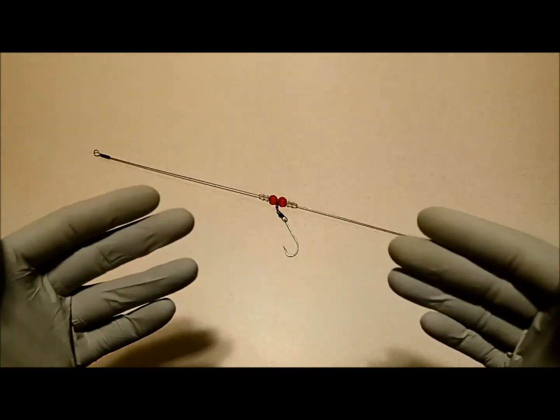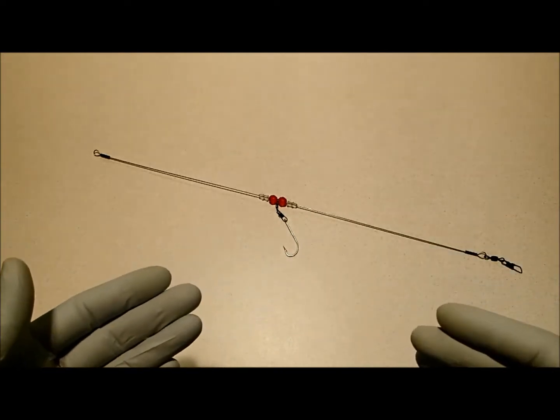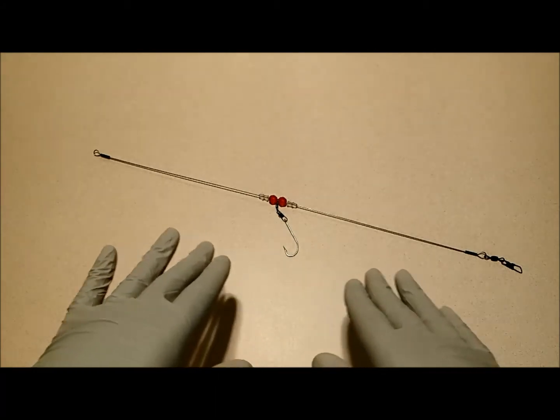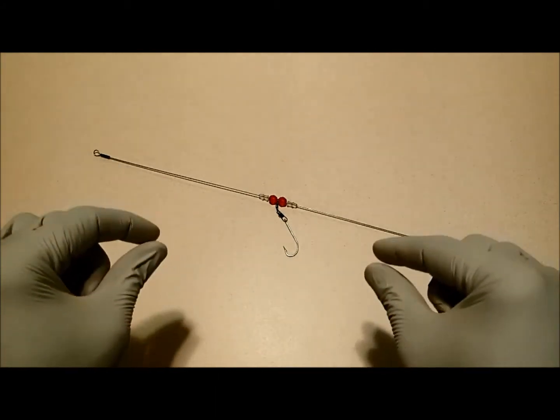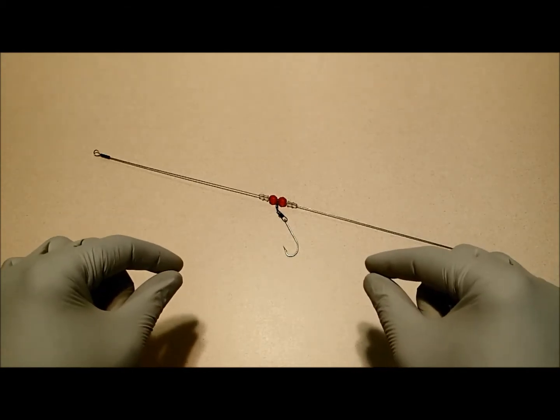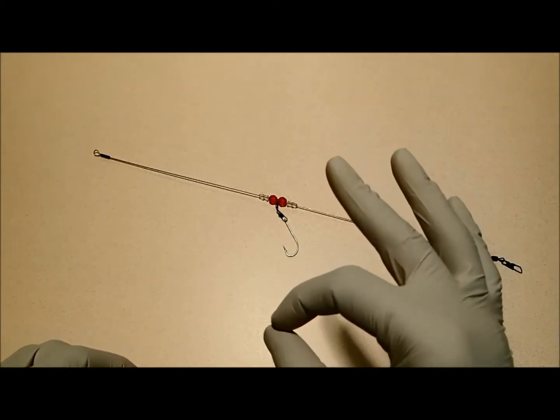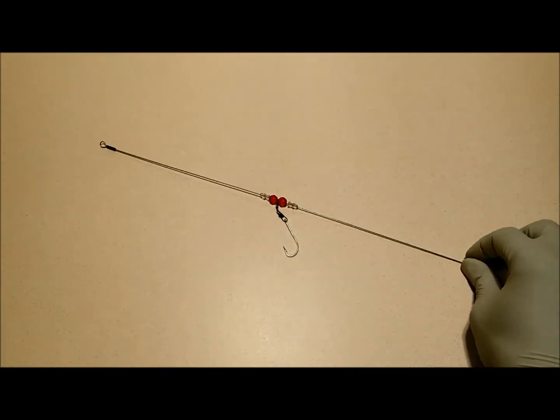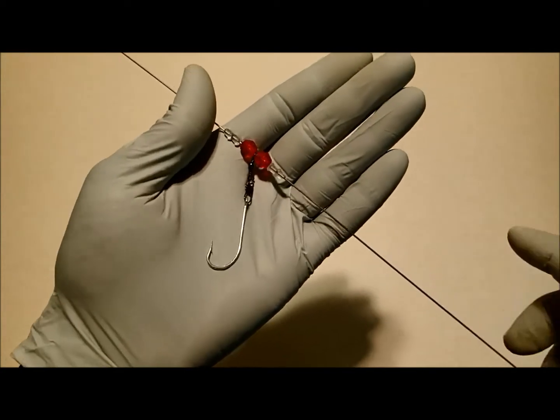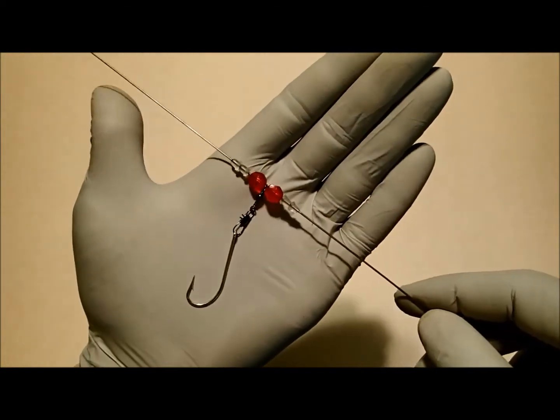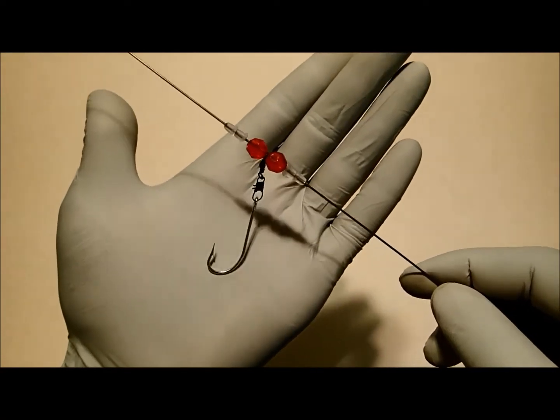Not to mention that monofilament leaders will also increase your chances of tangles. However, our drop shot knot rig will always present your bait just above the bottom with almost zero chances of tangling. Why can we say that? We can say that because if you take a closer look, you'll see that there's not much for it to tangle with.